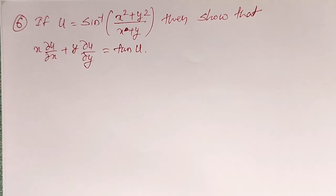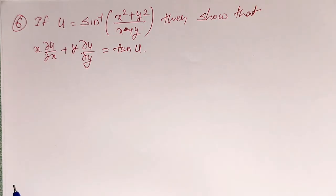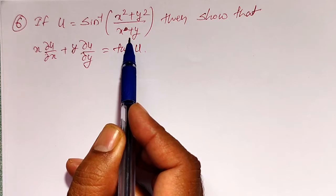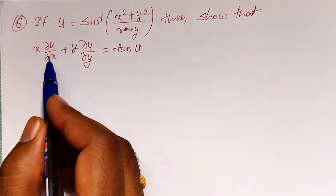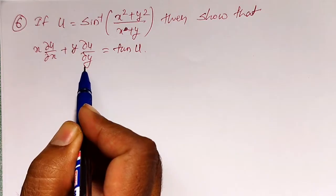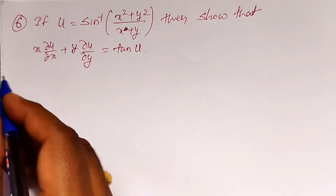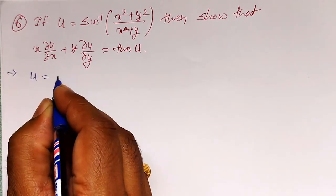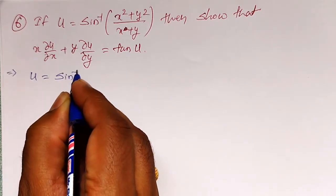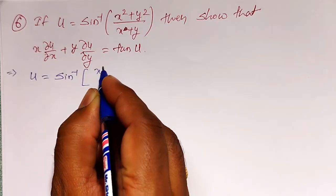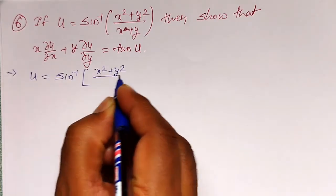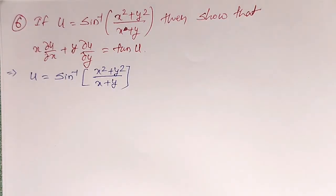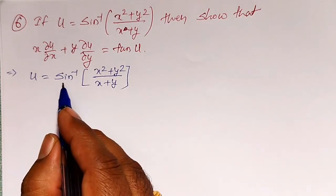In this video I'm going to solve an example on partial differentiation. If u is equal to sine inverse of x squared plus y squared divided by x plus y, then we have to show that x·∂u/∂x + y·∂u/∂y = tan(u). For that, let me first consider u equal to sine inverse of x squared plus y squared divided by x plus y.